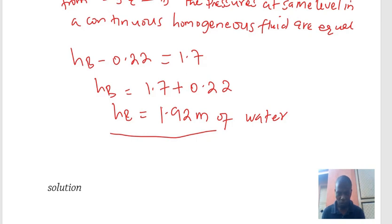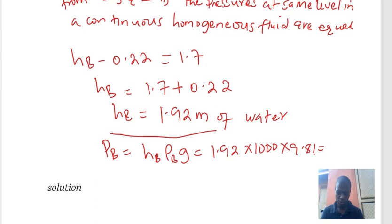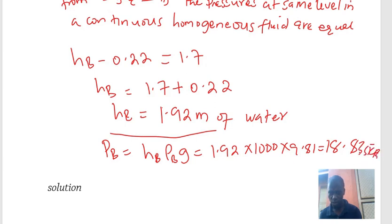Converting to pressure using the hydrostatic equation P = ρgH: pressure in B equals 1.92 times 1000 (density of water) times 9.81, giving a pressure in pipe B of 18.84 kiloPascals.